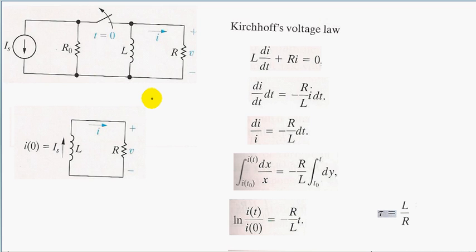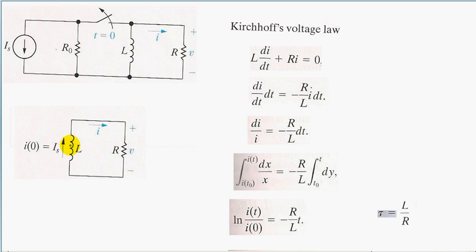Let's start off with an inductor. In our first circuit, we have a current source, a resistor, an inductor, and a switch. This current source will charge this inductor, and then we'll turn it off — we'll disconnect the left side of the circuit — and what will remain is this inductor and this resistor.